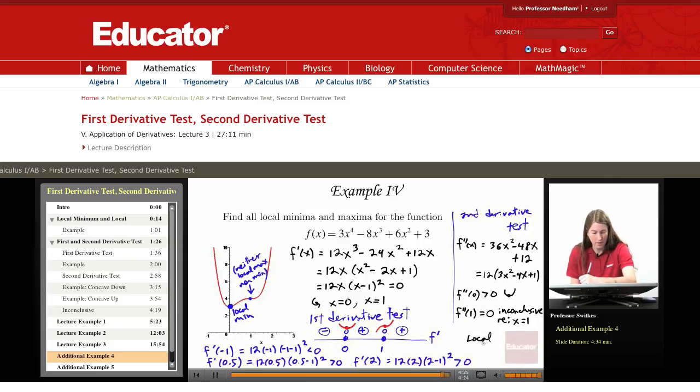And so here, our conclusion is that we have a local minimum at x equals 0. And that is the only local extremum that we have here.